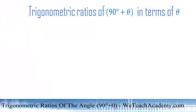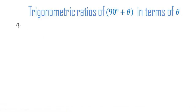Welcome to vteachacademy.com. Today's topic is trigonometric ratios of 90 degrees plus theta in terms of theta. We already know that 90 degrees plus theta lies in quadrant 2.